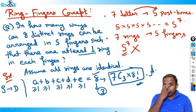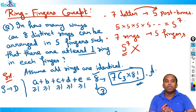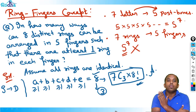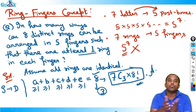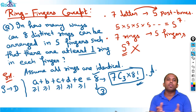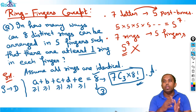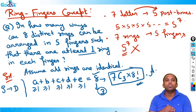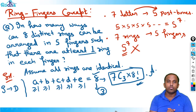So that's the funda behind the ring-fingers concept. If there are distinct rings and distinct fingers, we assume all rings to be identical first and solve the distribution, then arrange afterwards. This approach can apply to anything — whenever solving D-to-D distribution, assume identical first and arrange afterwards.